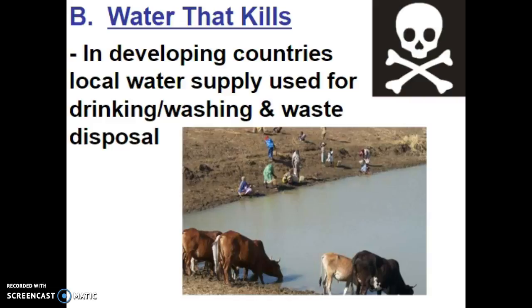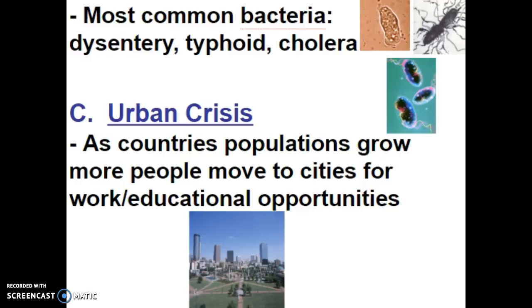Another problem in developing countries is that the local water supply is used as a kind of multi-purpose resource. Many developing countries will use water sources for drinking water, for washing themselves or their clothes, and also for waste disposal. The picture that you see here is very common in many developing countries, where animals and people will be sharing the same water source. The problems that arise with that include disease transmission. The most common bacteria found in many developing countries' water supplies will cause dysentery, typhoid, or cholera.